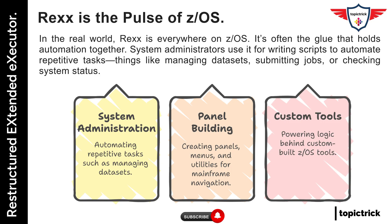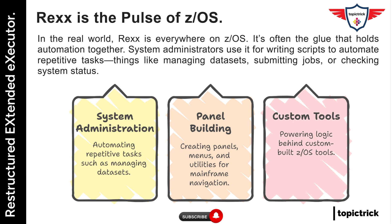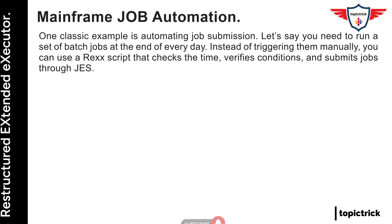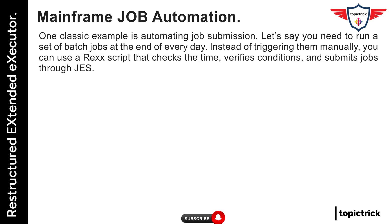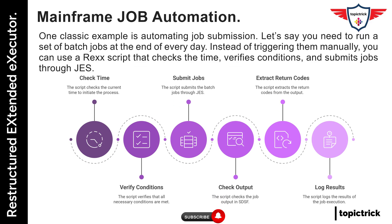One classic example is automating job submission. Let's say you need to run a set of batch jobs at the end of every day. Instead of triggering them manually, you can use a REXX script that checks the time, verifies conditions, and submits jobs through JES. It can even check job output in SDSF, extract return codes, and log the results—all without human intervention.